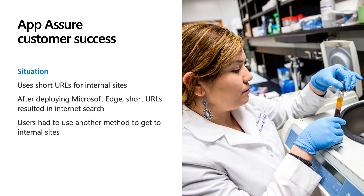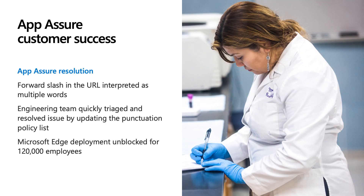Another customer success story involves a large American health insurance company. They used a shortened URL pattern as an easy way to give employees access to internal sites. After deploying Microsoft Edge, the internal shortened URL links redirected incorrectly to an internet search of a word in the URL instead of the internal site. After investigation, our support engineer discovered that a forward slash in the shortened URL pattern was not considered proper punctuation, causing it to appear as multiple words and triggering an internet search query. Our engineer engaged the Edge team, who identified that adding the forward slash to the Edge punctuation policy list resolved the concern. The product team released this bug fix in the next beta version of Edge just one month after it was reported, and more than 120,000 users were unblocked.